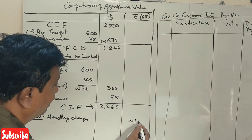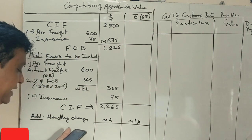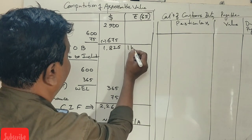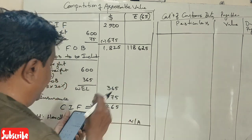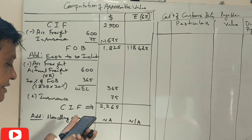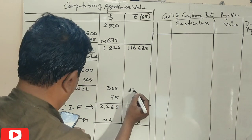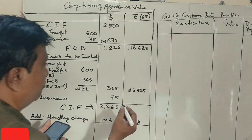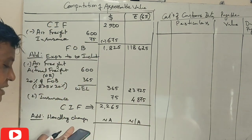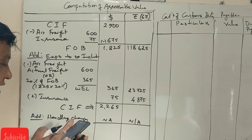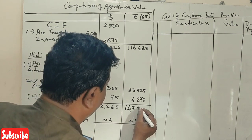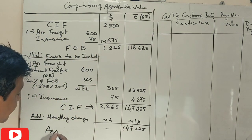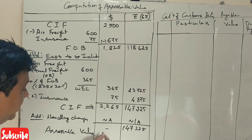Now converting to rupees: $365 × 65 = ₹23,725; $75 × 65 = ₹4,875; $2,265 × 65 = ₹1,47,225. So the assessable value is ₹1,47,225.